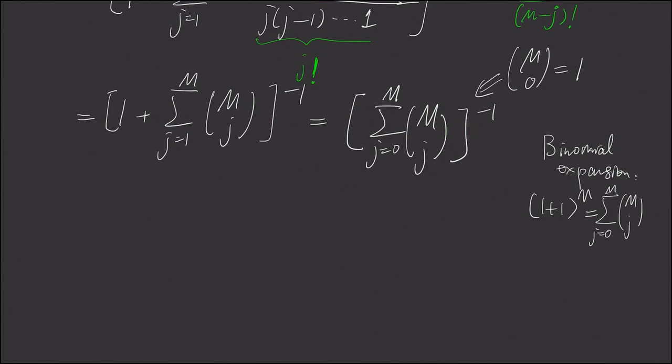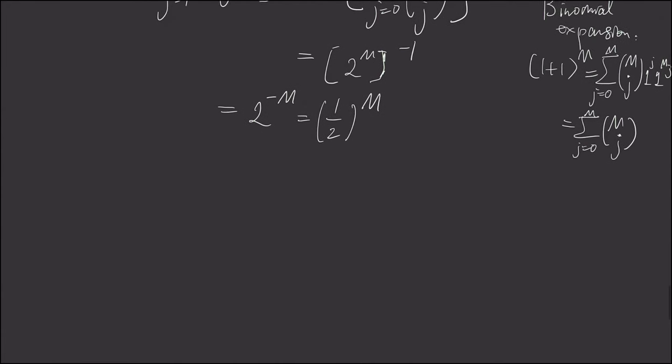So we can simply use a binomial expansion on the sum, one plus one raised to the mth power. And this is by definition the summation of j from 0 to m, m choose j, times one raised to the jth power, times one raised to the m minus jth power. And because one raised to any power is one, this is the sum of m choose j.